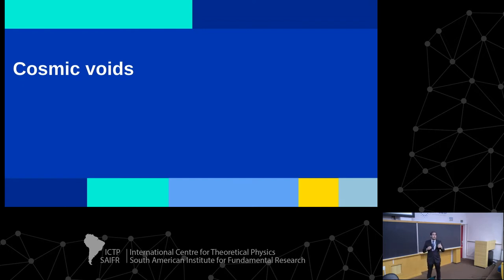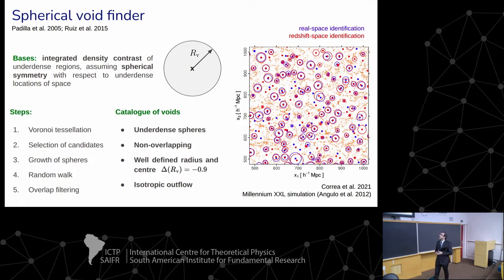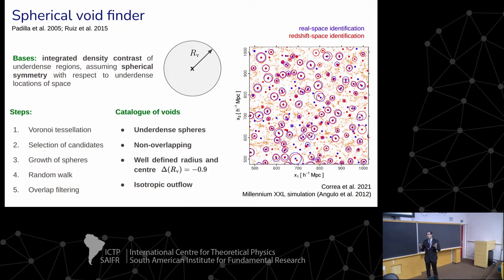For the second part of my talk, I will go deeper into the phenomenology of voids. A key aspect in all void studies is the method used to identify them. For all my work, I used the so-called spherical void finder. It is based on the integrated density contrast of underdense regions, assuming spherical symmetry, with respect to underdense locations of space. The method returns a catalogue of voids that are underdense spheres that do not overlap, with a well-defined radius and centre, motivated by physical considerations, from which an isotropic outflow of galaxies is observed.